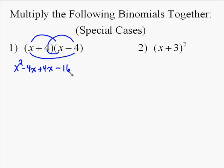And what's interesting here is the negative 4x plus 4x, they cancel themselves out, or they add up to 0, and they go away, and so you end up with x squared minus 16.